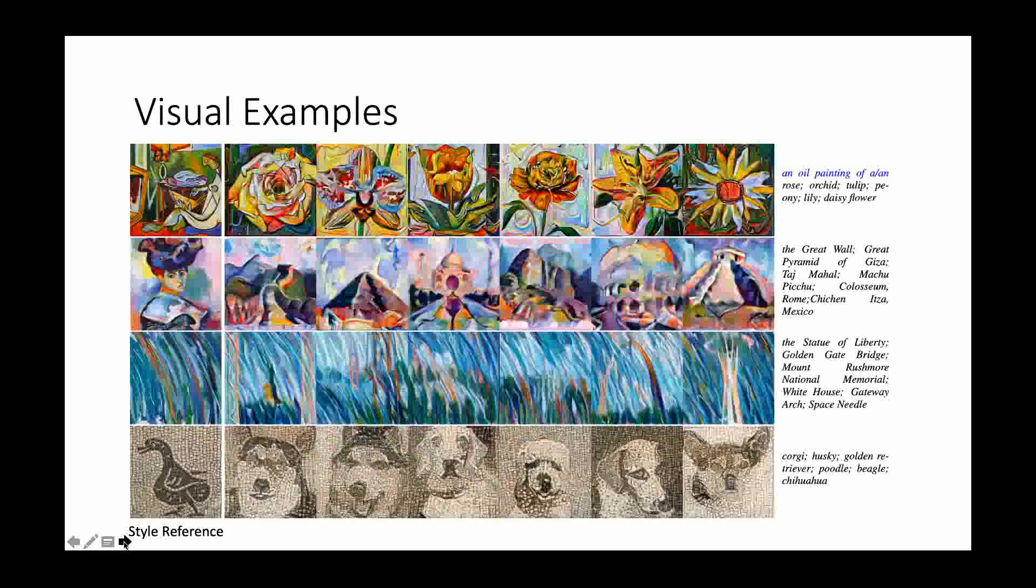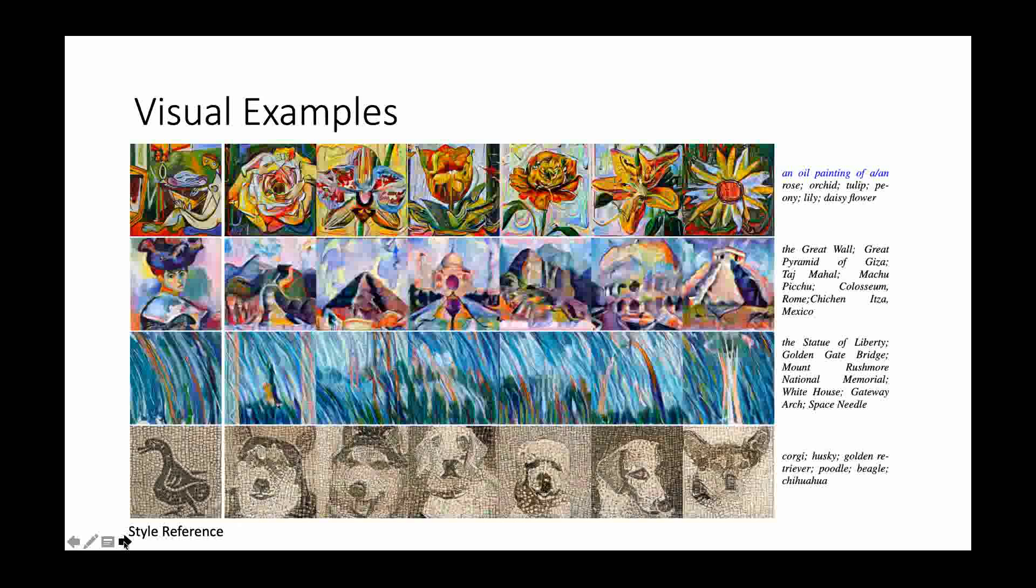Here are some visual examples to show that we can generate images according to the style reference on the left-hand side, while following the text inputs on the right-hand side. Both the style and the text inputs are very diverse.